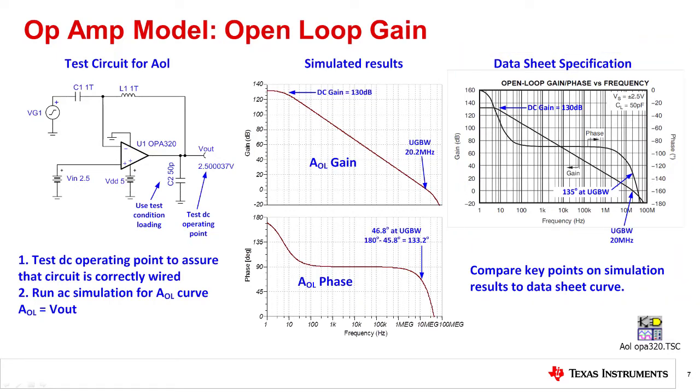To compare the two plots, look at a few points on the magnitude and phase plot. Some key points to consider are the DC gain and the unity gain bandwidth on the magnitude plot. In the phase plot, check the phase at the unity gain bandwidth frequency.